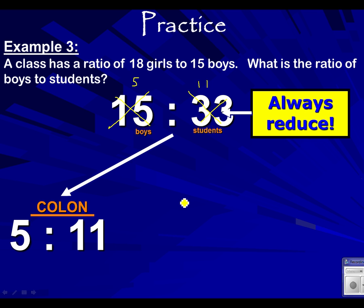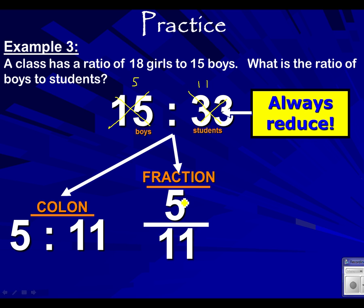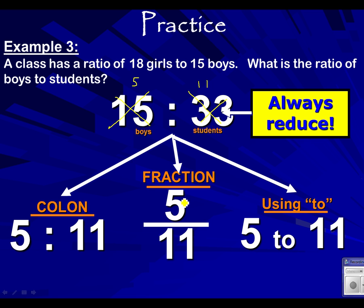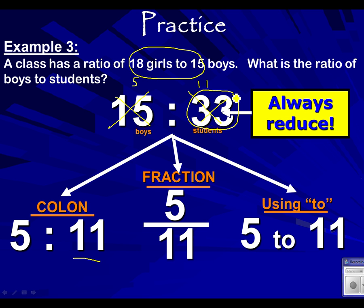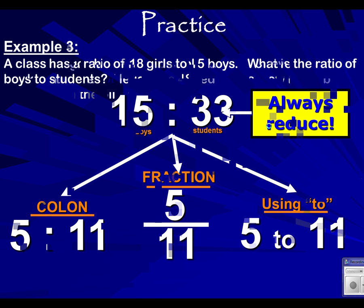Using a colon, there are five boys for every 11 students. Here's the fraction, five to 11, and here's the colon — five to 11. We used 11 because it reduced from 33 students, since 18 plus 15 is 33.